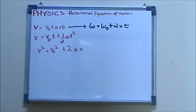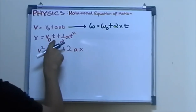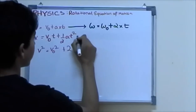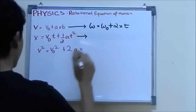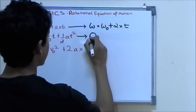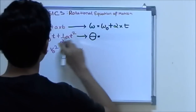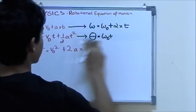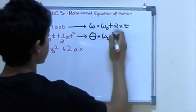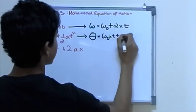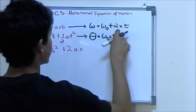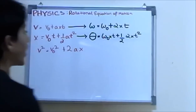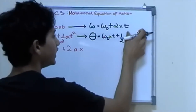If you were to take the second equation, which says distance equals initial velocity times time plus half times acceleration times time squared, then distance becomes theta — which gives us the angle — initial velocity becomes initial omega, and acceleration becomes alpha. So: theta equals initial omega times time plus half times alpha times t squared.